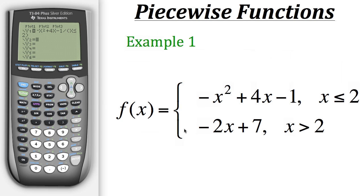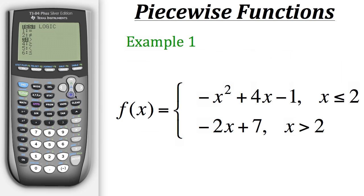Now let's put in the second expression into our Y2. So we have negative 2x plus 7. Now we need to put its condition of x is greater than 2. So to do that we'll just hit divide, and then in parentheses put in x, and then go back to TEST again — second MATH — and put in the greater than symbol, and then 2.